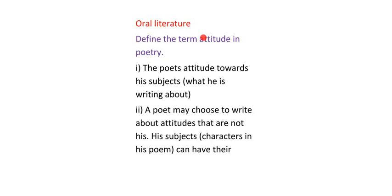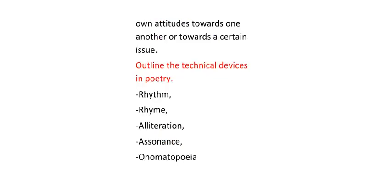Define the term attitude in poetry. Attitude is the poet's attitude towards his subject — in other words, what he is writing about. A poet may choose to write about attitudes that are not his. Characters in his poem can have their own attitudes towards one another or towards a certain issue.